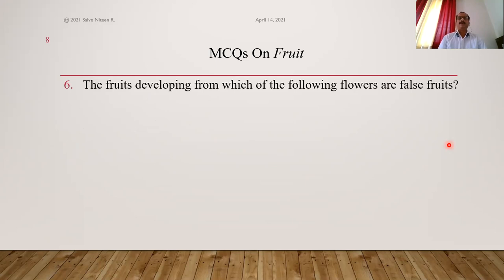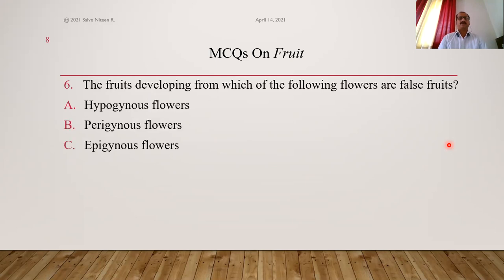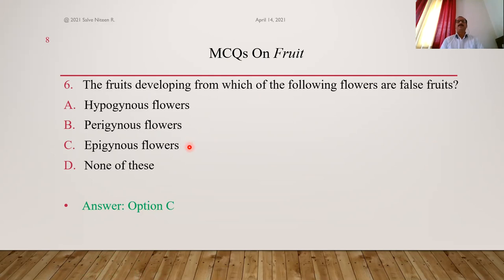The fruits developing from which of the following flowers are false fruits? Options: hypogynous, perigynous, epigynous. Epigynous flowers have inferior ovary; fruits developing from flowers with inferior ovary are called false fruits. Answer is option C.